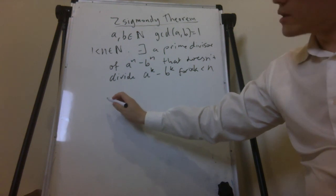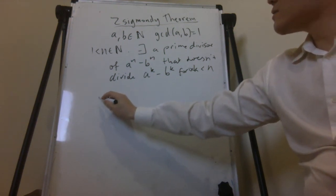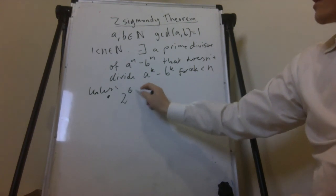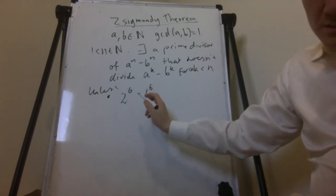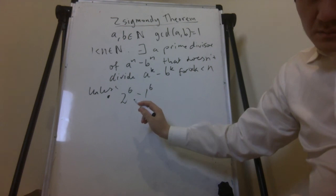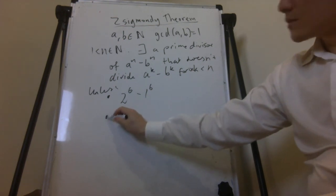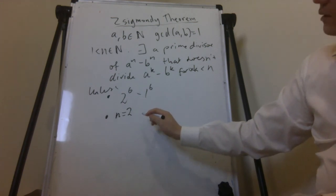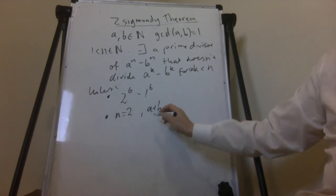Unless we're talking about 2 to the 6 minus 1 to the 6, or n equals 2, then a plus b is a power of 2.